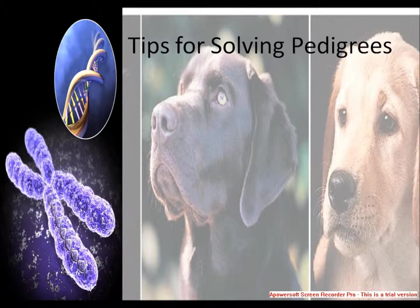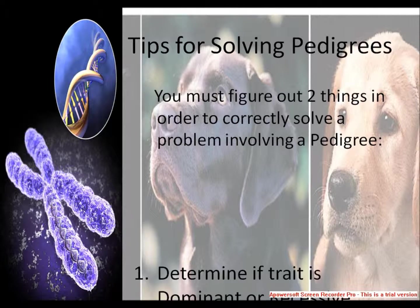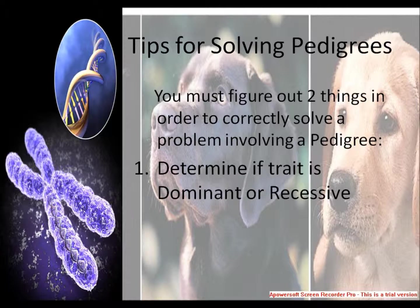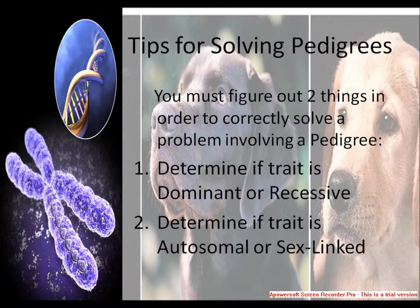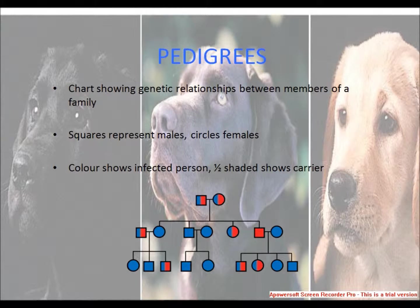Y-linked inheritance affects only males. Affected males always have an affected father. All sons of an affected man are affected. Tips for solving pedigrees: you must figure out two things in order to correctly solve a problem involving a pedigree — determine if the trait is dominant or recessive, and determine if the trait is autosomal or sex-linked. In a pedigree chart, squares represent males, circles represent females, color shows an affected person, and a half-filled symbol shows a carrier. This lecture may be helpful to you. Thank you.